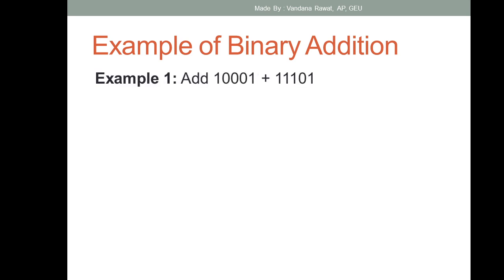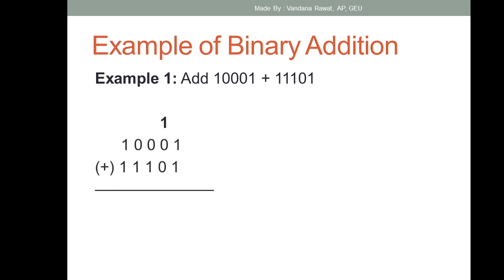For example, you have two binary numbers. The first number is 100001 and the second number is 111001. So how do you add these two numbers? The first number is 1-triple-zero-1 and the second number is triple-1-zero-1, and you have to add these two numbers.